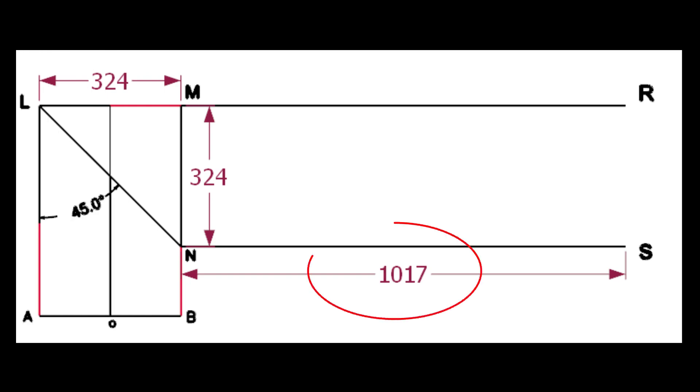We know the circumference of the pipe is 1017 millimeters. Draw the lines MR and NS.